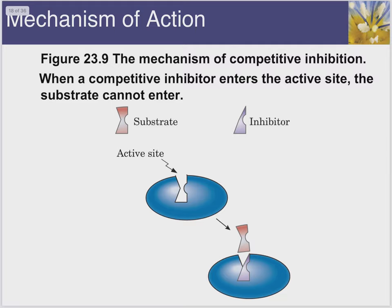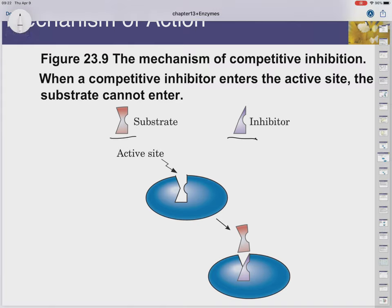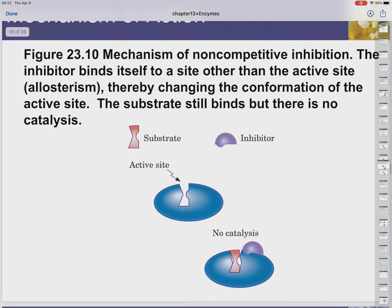Now in terms of inhibition, let's talk about competitive inhibition first. Inhibition can be competitive, meaning the inhibitor competes for the active site, like the substrate. Often the inhibitor is structurally similar to the substrate. In medicine, when we try to make drugs that inhibit a particular enzyme, we often make them structurally similar so they compete. You can see here the inhibitor is bound to the enzyme and now the substrate can't bind.